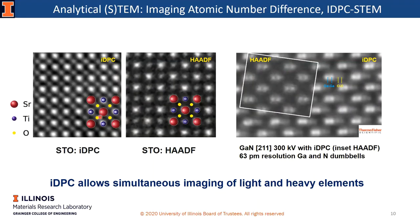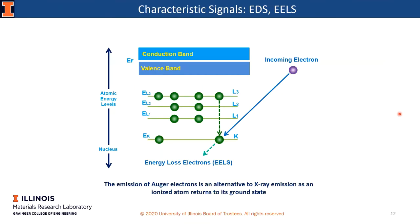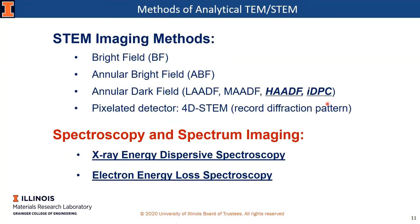Here are two examples of iDPC imaging. The first is STO again — in the iDPC image, we can clearly see the oxygen atoms, which are not visible in the HAADF image. The second example is gallium nitride in the [211] direction — we can see both gallium dumbbells and nitrogen dumbbells very clearly, whereas in the HAADF image we can only see the gallium atoms. However, for imaging methods to identify elements, you need to know what elements are present already and need a reasonable difference between Z numbers, which is often not the case. Imaging light elements is still challenging, so in the following section I'll discuss spectroscopy-based methods.